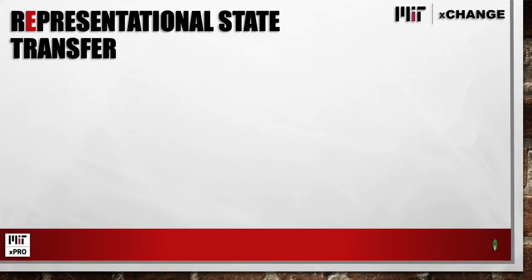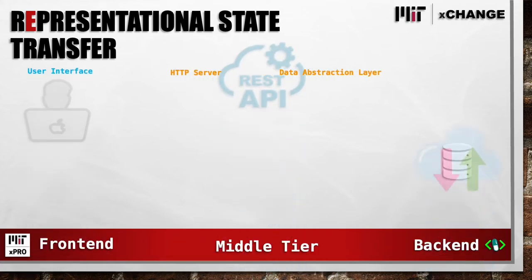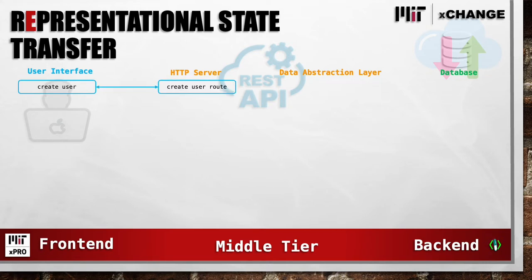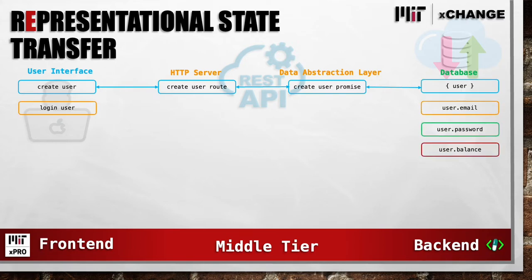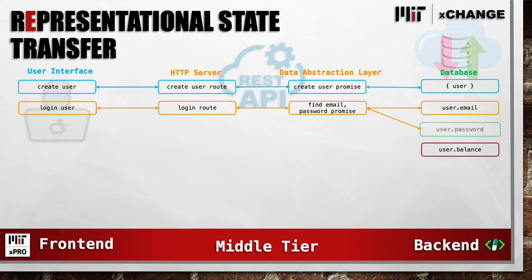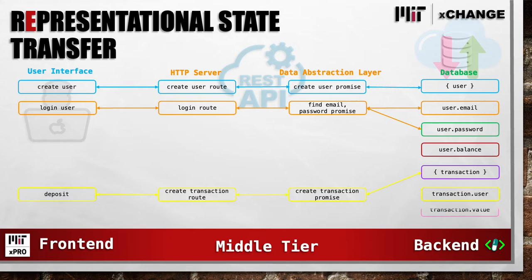Here we illustrate the API documentation in graphical format, broken down into the front-end, middle-tier, and back-end. When we create a user, our HTTP server uses the createUser route, followed by a createUser promise, and the database then generates the user object. To log the user in, we follow the HTTP login route; the data abstraction layer then finds the email and password in the database via promise. Making a deposit uses the createTransaction route, followed by a createTransaction promise, which results in a transaction object being created in the database.